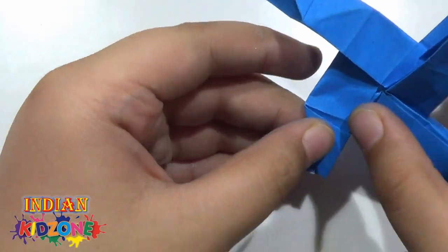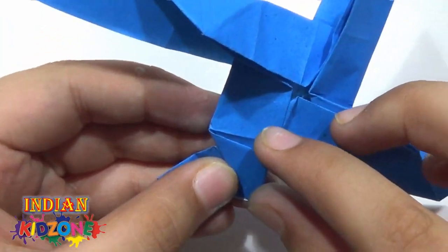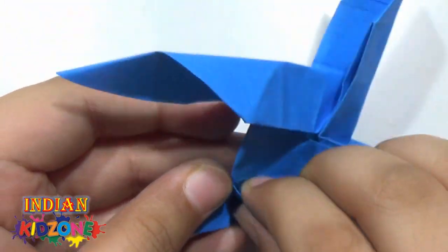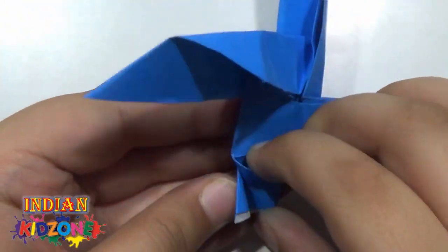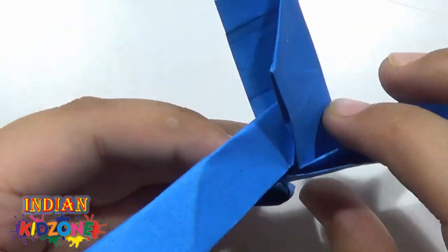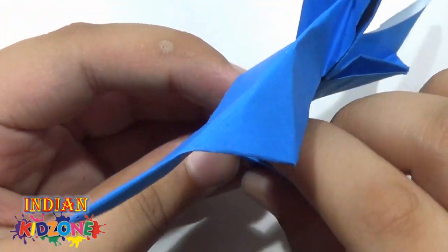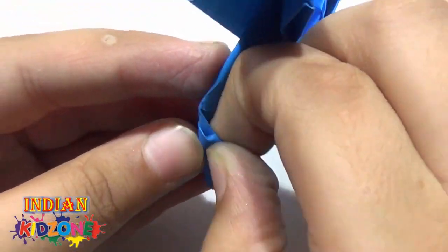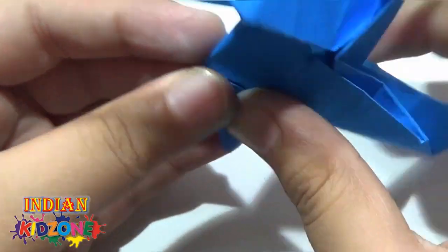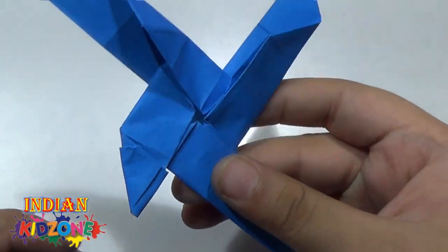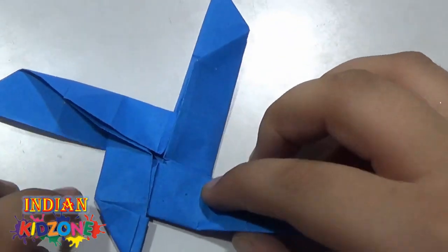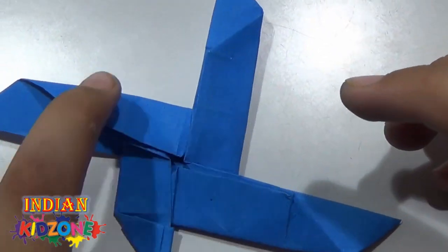And fold, and you can see this pocket. This one. We will open this pocket like this. And now we will put this flap into this pocket. Like this. And we will repeat this move on other three flaps.